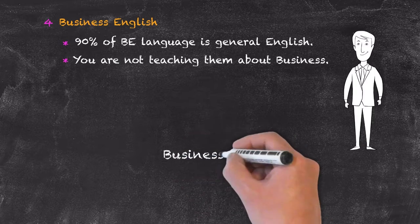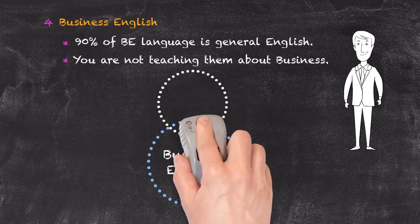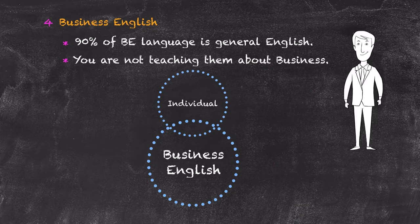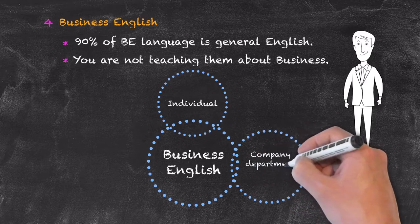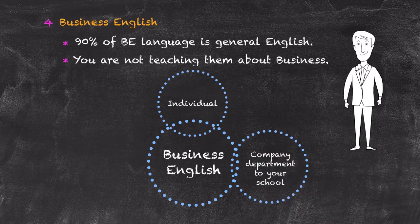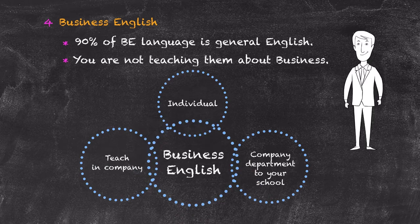Within the business English setting there are often different types of ways in which learners can be taught. As with general English, within business English we can have the individual learner or the one-to-one. Another situation is where a whole department within a company will come to your school. Or you may be invited by the company to teach in the company itself. Within each of those settings there are a number of common factors that we need to consider when teaching business English.